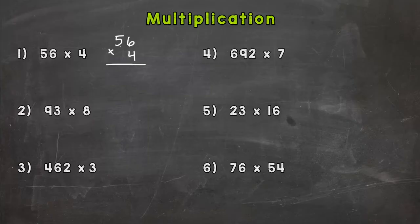So 56 times 4, we are going to start with 4 times 6, which is 24. We put our 4 in the ones place, carry our 2. Now we do 4 times 5, which is 20, plus that 2 is 22. Circle our answer and we have our product, 224. Product is the answer to a multiplication problem.